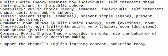Vocabulary: Public choice theory examines how individuals' self-interests shape their decisions in the public sphere. Tenses: Present simple — examines, shape, decisions. Grammars: Noun phrase — Public choice theory. Verb — examines. Noun — individuals'. Noun — self-interests. Verb — shape. Noun — decisions. Noun phrase — public sphere. Comment: Public choice theory provides insights into the behavior of individuals in public decision-making.